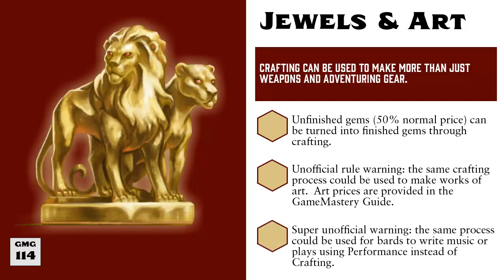And stepping even further into house rule territory, you could even apply the same process to other skills. Maybe a bard wishes to write their masterpiece symphony. They could use, in theory, the performance skill in place of crafting, but it would work the same way: pay 50% of the value up front, spend four days working, and then pay the remaining balance or continue lowering that balance with additional days of work. It might seem odd that you have to pay 500 gold pieces up front when writing a symphony that the GM valued at 1000 gold pieces, but that could be explained away by the need to rent practice space, or for hiring professional musicians to play and rehearse your music as you continue to listen to it and refine it until it is a finished symphony. Again, this is deeply within house rule territory, so use with caution, but the point I want to get across is to look outside the box and try to find ways that you can make crafting work beyond just building stuff for adventuring.